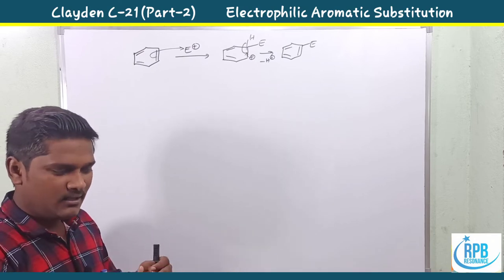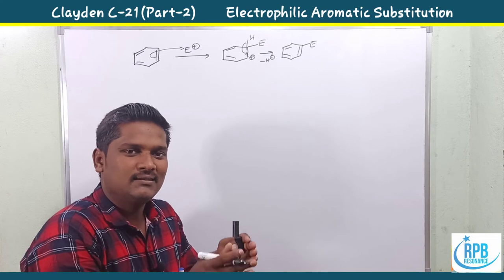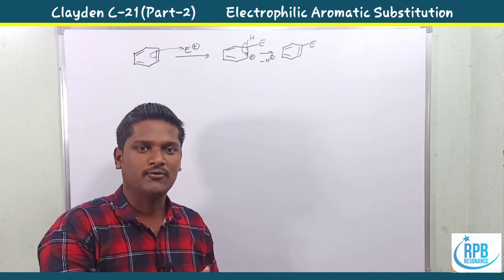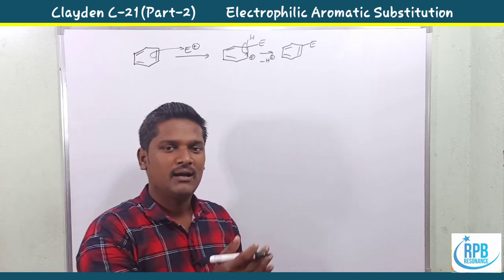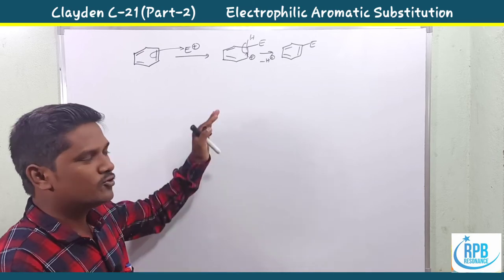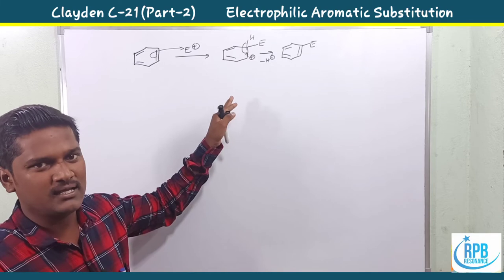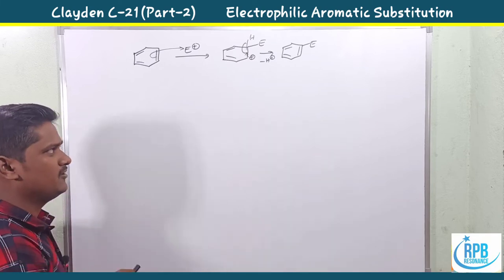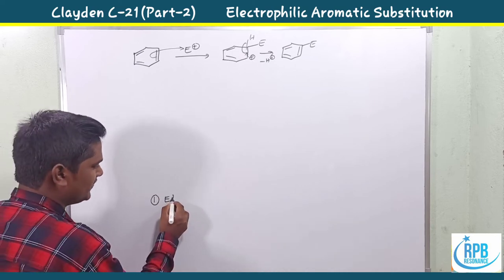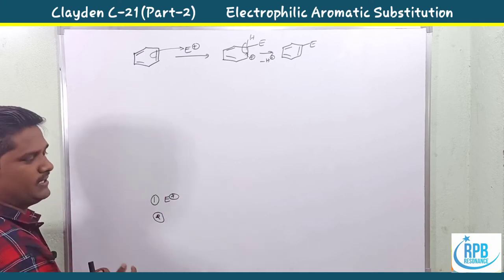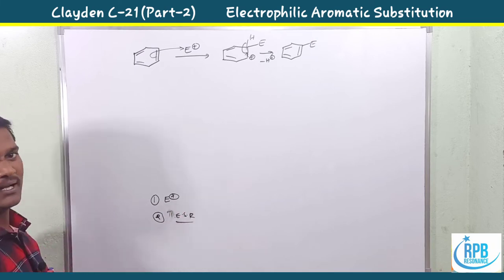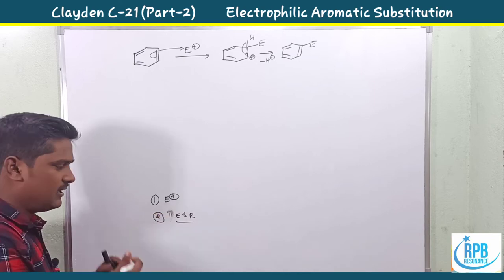Today I'm going to discuss different electrophiles: the nitro group in nitration, the sulfonyl group (SO3H) in sulfonation, the alkyl group in Friedel-Crafts alkylation, and the acyl group in Friedel-Crafts acylation. In each case, we must first confirm the electrophile, then follow the EAS mechanism.